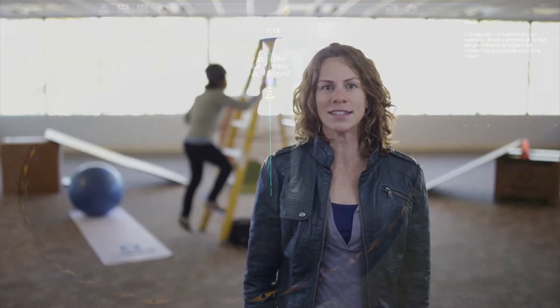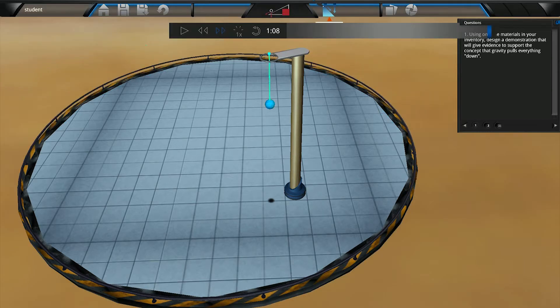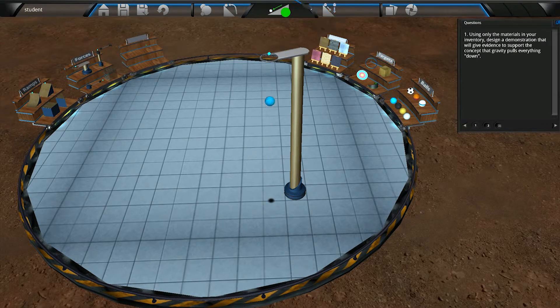Once they finalize their designs, they will experiment with different states of gravity and examine how their chosen object moves differently in the various gravity states.